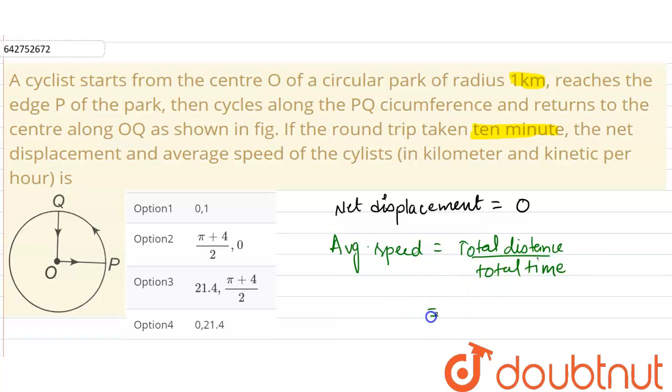Now the total distance the cyclist traveled is OP plus PQ plus QO, in how much time? In 10 minutes. Okay, so this will be in kilometer per minute.